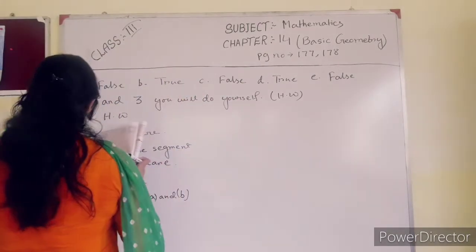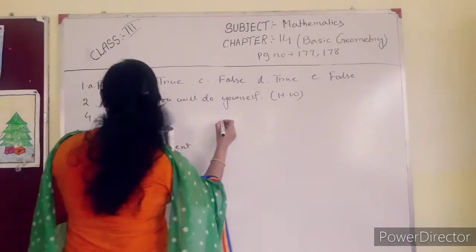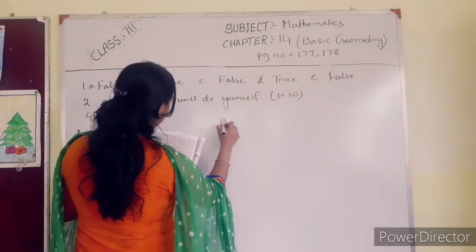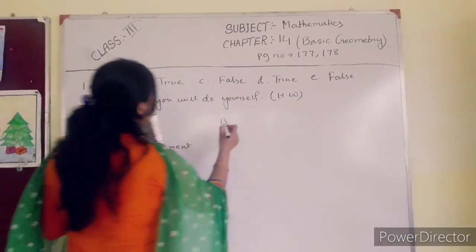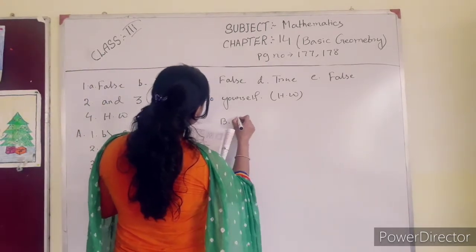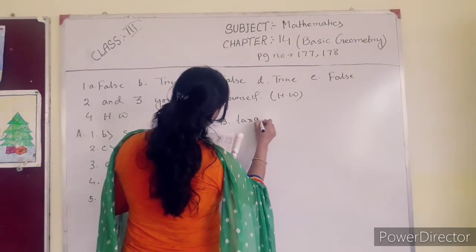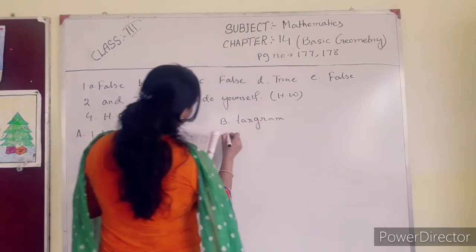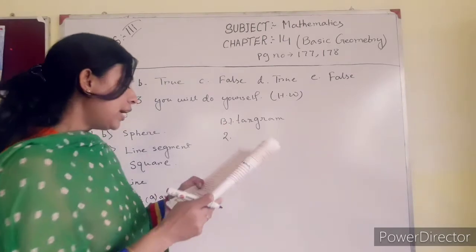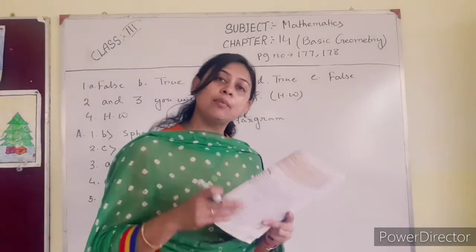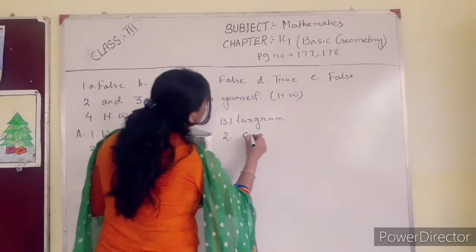Now fill in the blanks. Number 1: a tangram is an old Chinese puzzle — so the answer is tangram, T-A-N-G-R-A-M. Number 2: every face of a cube is a square — I have already told you every face of a cube is a square.